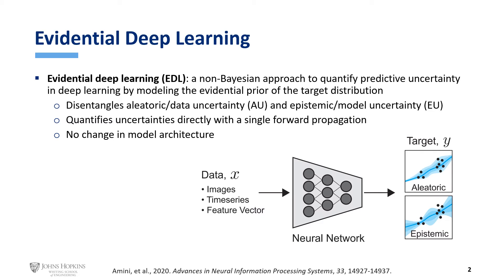Let me briefly give some background information about Evidential Deep Learning, or EDL for short. EDL is an efficient approach to quantify predictive uncertainty in deep learning by modeling the prior distribution of the target labels. Given an input data X, an EDL model should be able to provide not only the prediction, but also the uncertainties associated with that prediction.